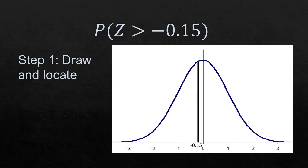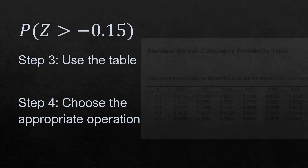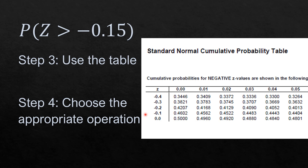For the second example, we have the probability that Z is greater than negative 0.15. I have drawn and located negative 0.15. The second step is to shade the region of the curve. Since it is greater than, any number greater than negative 0.15 is included in the shaded region, so we shade to the right. On the table, we have negative 0.1 and 0.05, and their intersection gives 0.4404.